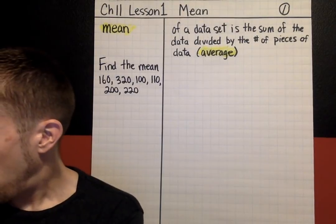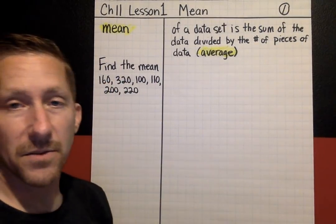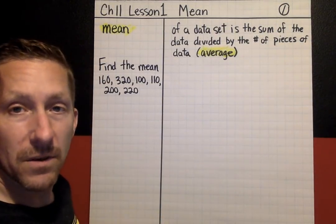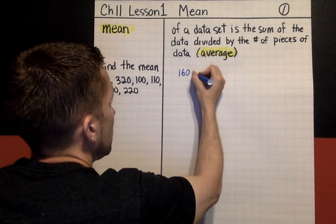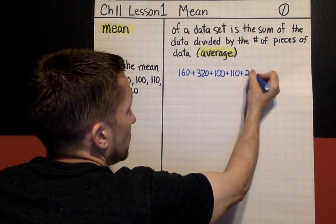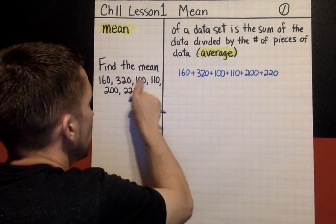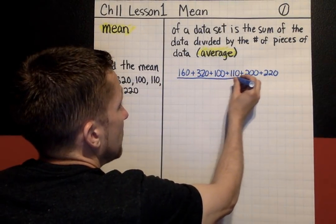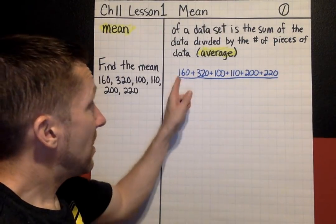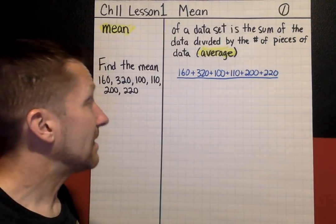Going back to our definition, we're going to sum, find the sum of all the data, add all those together, and then divide that sum by how many pieces of data there are. When you're showing your work for finding the mean, it would look like this. You would total everything: 160 plus 320 plus 100 plus 110 plus 200 plus 220. Always a good idea to count the values. One of the biggest mistakes I find kids make, and I make myself all the time, is you'll skip a number. You'll write it all down but miss one, or miss one when you're adding as well.